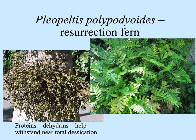Here's a common fern in South Florida, Pleopeltis polypodioides, commonly called the resurrection fern. It gives you an indication of whether you need to water your plants. If it's dry, the plant looks shriveled up. But following rain or dousing with the hose, the fronds open up and the plant starts actively photosynthesizing. It turns out there are certain proteins in the leaves called dehydrins that help plants like this withstand nearly total desiccation.